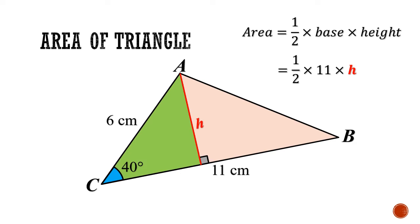Fortunately, the height cuts out a right-angled triangle shown in green, with 40 degrees as the reference angle. The hypotenuse is equal to 6 cm, and H is the opposite side for this triangle. This allows us to use the sin ratio, so sin 40 equals H over 6, so H will be equal to 6 sin 40 degrees.